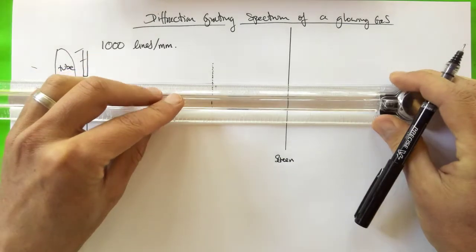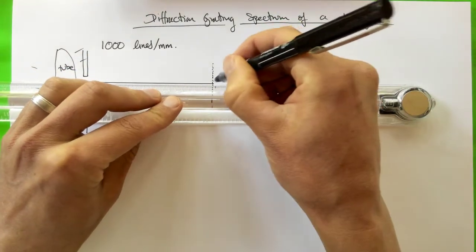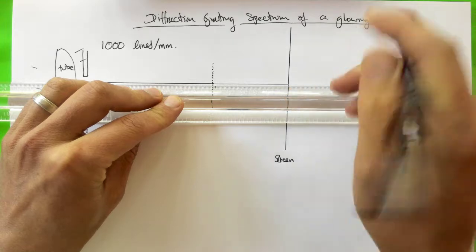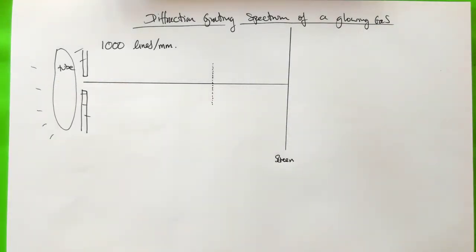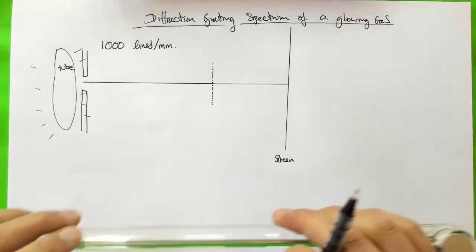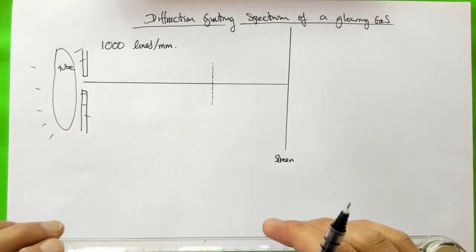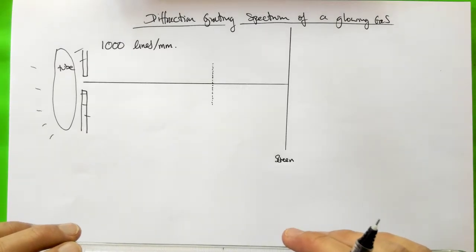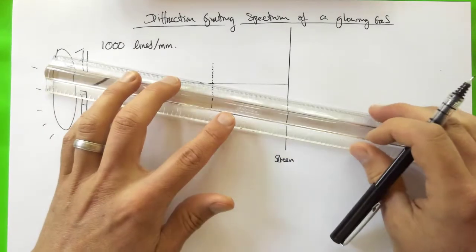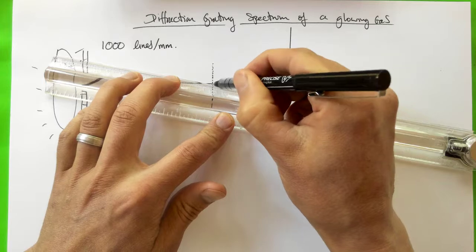So there'll be a central maximum where the light is undeflected and just goes straight through. And in our question it tells us that three different coloured spots appear on the screen and they are corresponding to angles of about 26 degrees, actually it says 25.7 in my notes, so that's going to be the first spot.